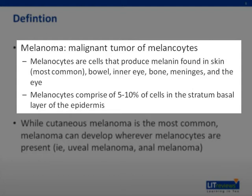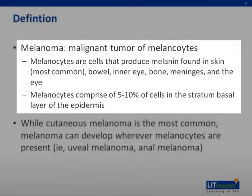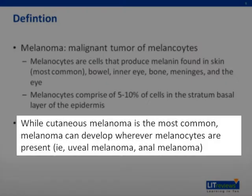Melanocytes comprise 5-10% of cells in the stratum basal layer of the epidermis. While cutaneous melanoma is the most common, melanoma can develop wherever melanocytes are present, including uveal melanoma and anal melanoma, and it's important to keep this in mind when evaluating patients.